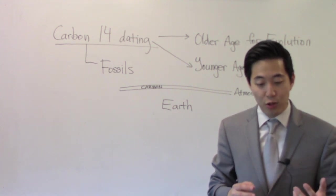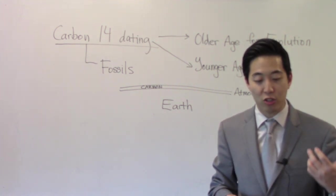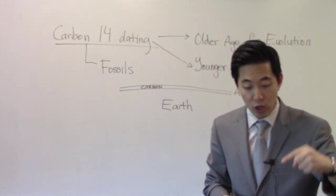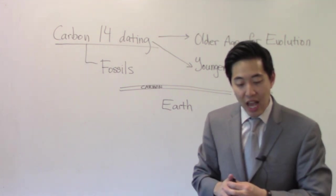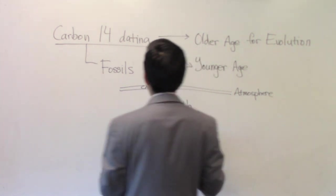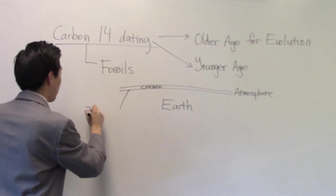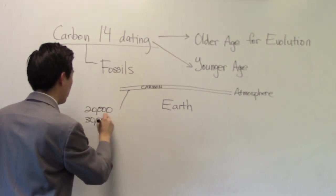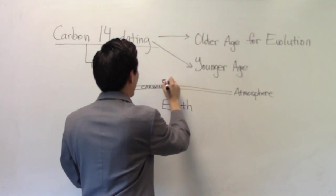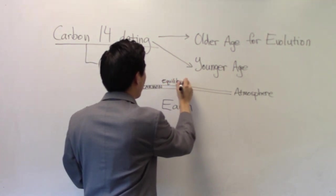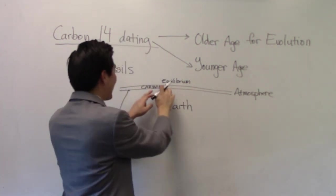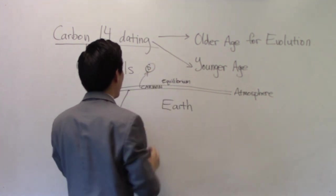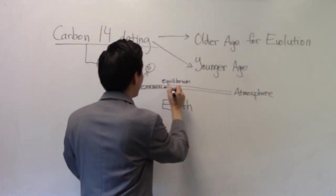Now here's the thing. The founder of the carbon-14 dating method, his name is Dr. Willard Libby. He says that if we were to go for somewhere between 20,000 to 30,000 years, we would reach equilibrium here in carbon. Now what do I mean by that? There's carbon that's disintegrating, and then there's carbon within that's assimilating.